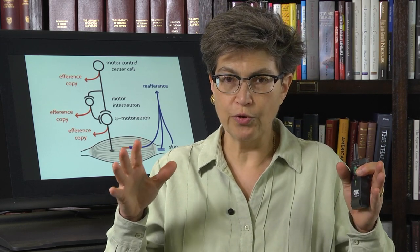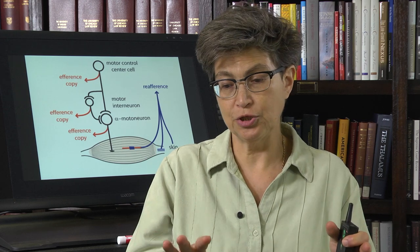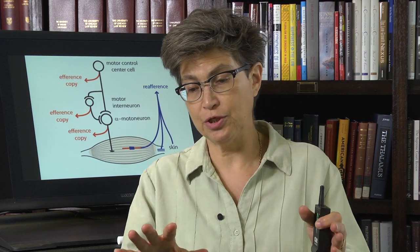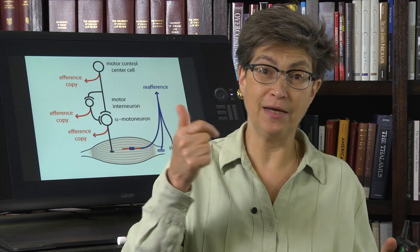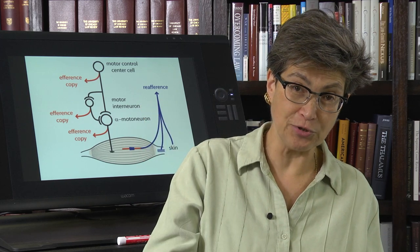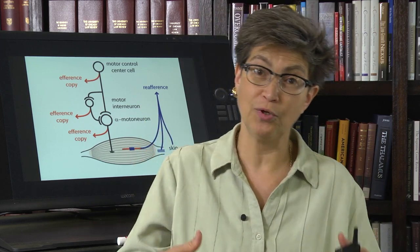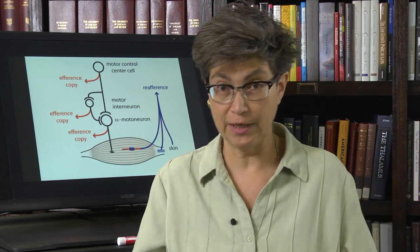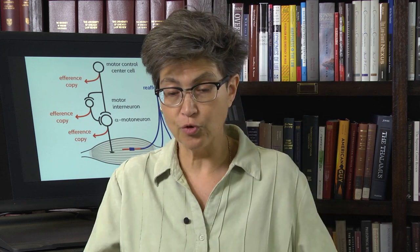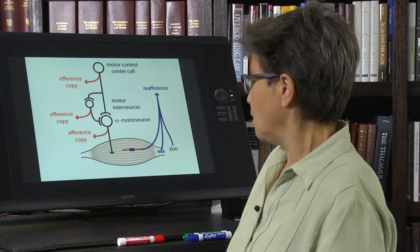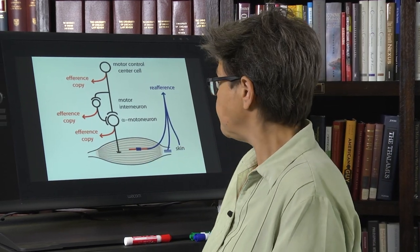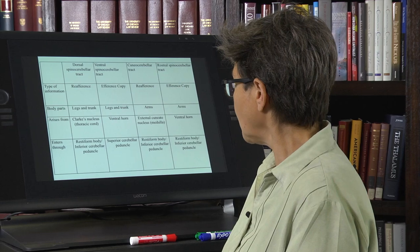There are four tracts. There is essentially a reafference tract and an efference copy tract for the arms, and one of each for the legs. The trunk is divided so that the lower trunk goes with the legs and the upper trunk goes with the arms.